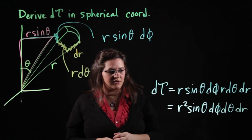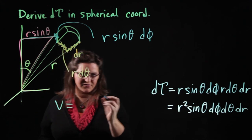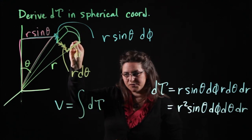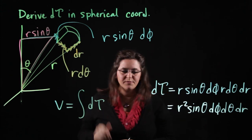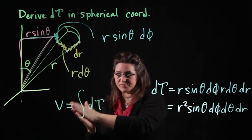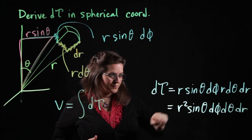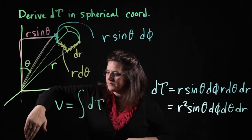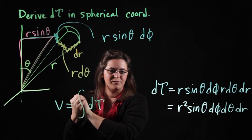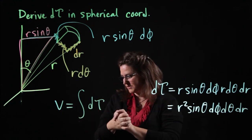I encourage you to use this d tau to derive a volume that you know — the volume of a sphere. The volume of a sphere is the sum of all these little tiny cubes added up in spherical coordinates. This will be three integrals. The limits of integration must describe where you have the volume: r will go from zero to capital R, theta will go from zero to pi — from the polar axis all the way down — and phi will go from zero to two pi, rotating that semicircle all the way around. Try that and see if you can get the volume of a sphere, which is of course four-thirds pi r cubed.